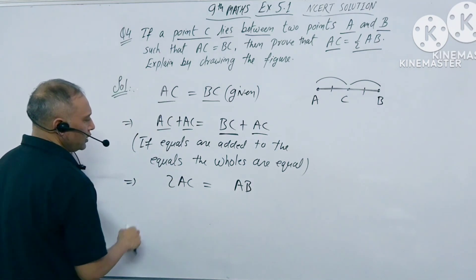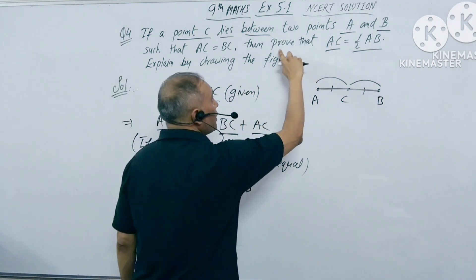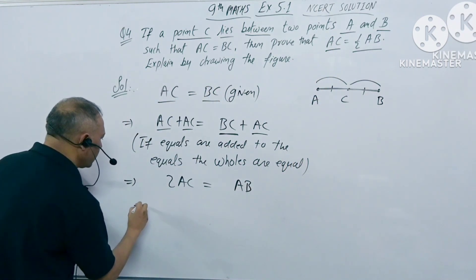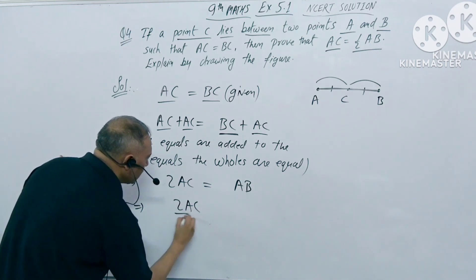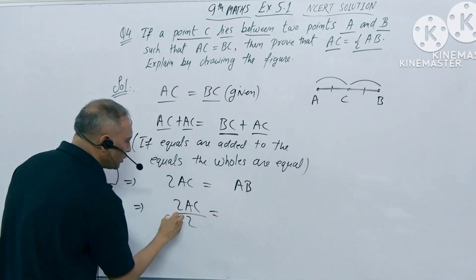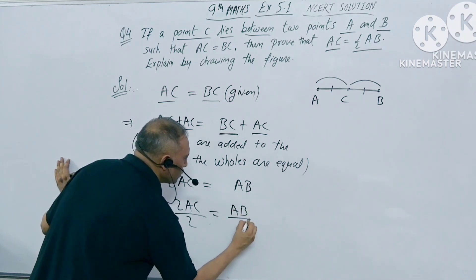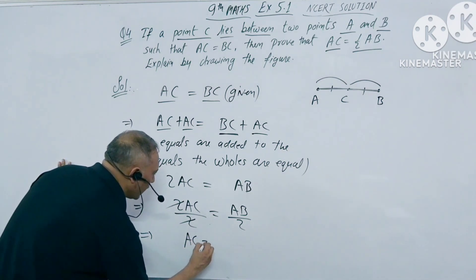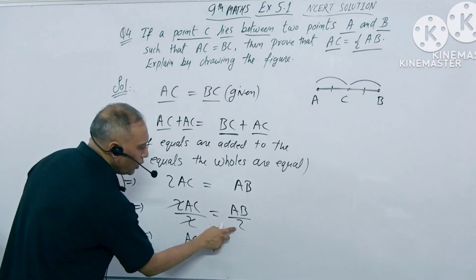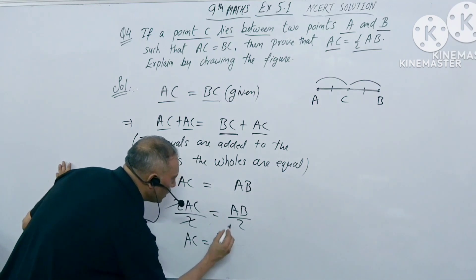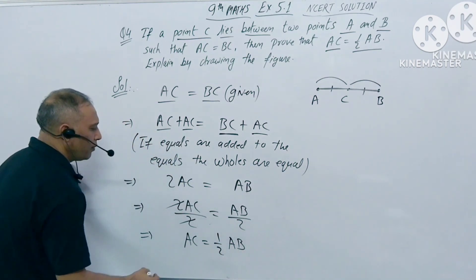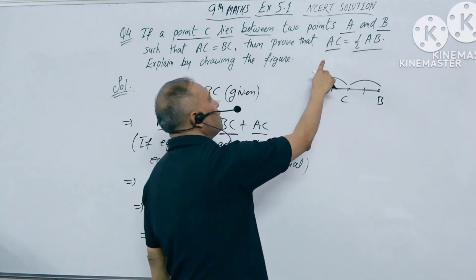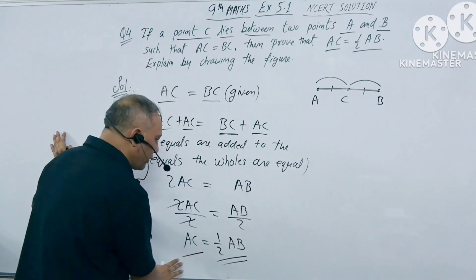Now, on the left-hand side we have 2AC, but we need just AC. To remove the 2, we divide both sides by 2. If we divide 2 from the left-hand side, then on the right-hand side AB is also divided by 2. The 2 cancels out, so on the left-hand side we get AC, and on the right-hand side we get AB upon 2, which we can write as one-half AB. So AC equals half of AB, and that is exactly what we had to prove. This is our final answer.